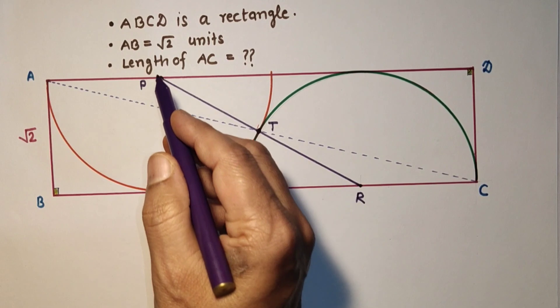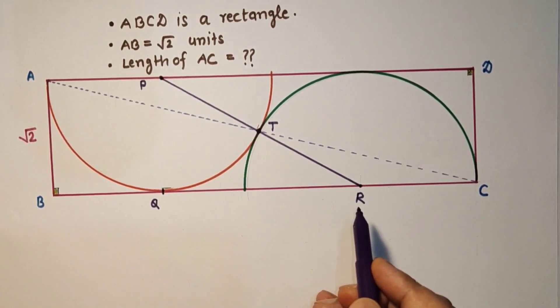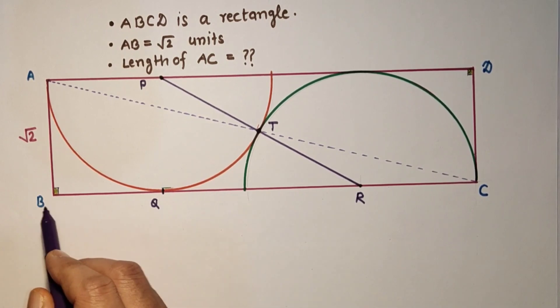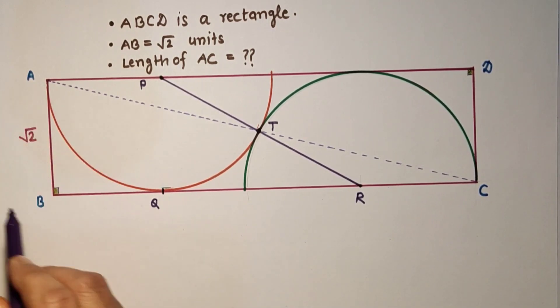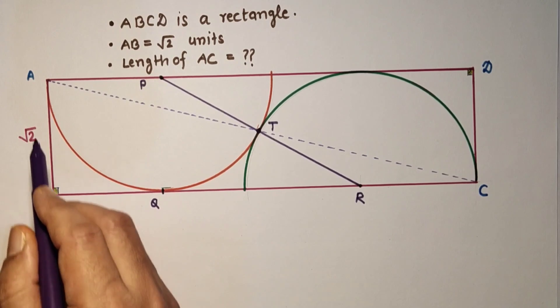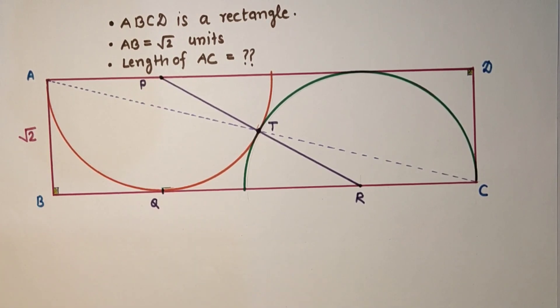If we join PQ then PQR will be a right-angled triangle. Because this BQ is equal to BA as tangents drawn from an exterior point will be equal.